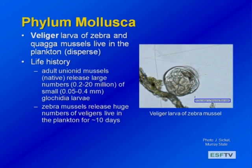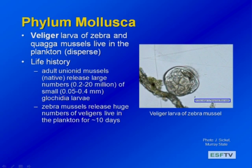That's a very different life cycle than the zebra and quagga dreissenid mussels that have invaded the northeast over the past 30 years. They produce larvae that live in the plankton for a week or two — that's how they disperse. The native mussels release small glochidia larvae that attach to fish, but the zebra mussels release millions and millions of veligers repeatedly during the course of a year. These veliger larvae can live in the open water for a week or two, be dispersed to many other places, and survive longer because they can eat algae and function as little zooplankton.